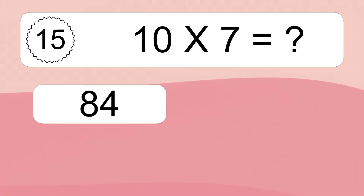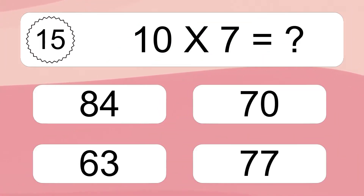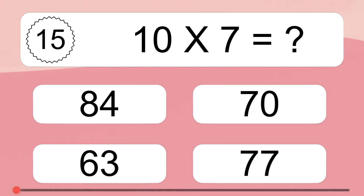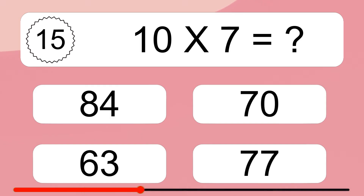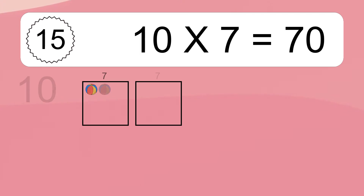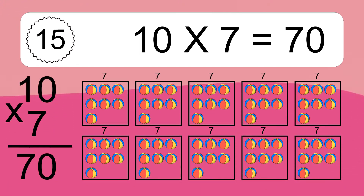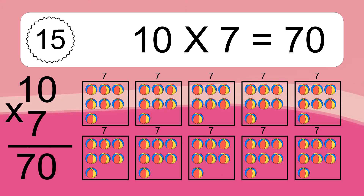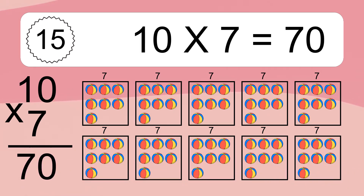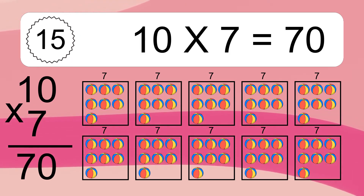10 times 7 equals what? 10 times 7 equals 70. We have 10 boxes, and each box has 7 colorful balls inside. If you count all the balls in all the boxes together, you will have 10 times 7 balls. This equals 70 balls.